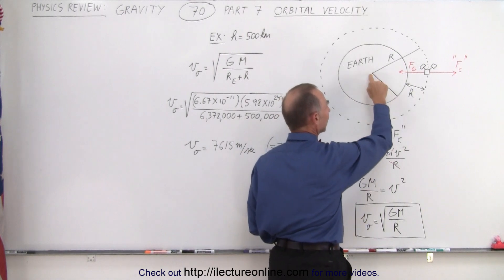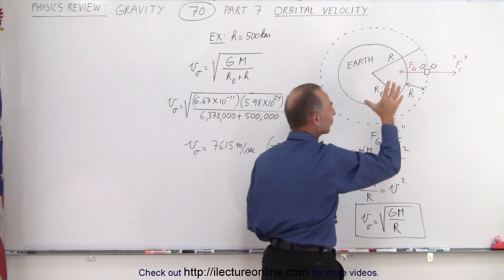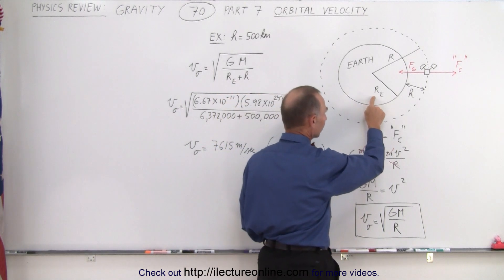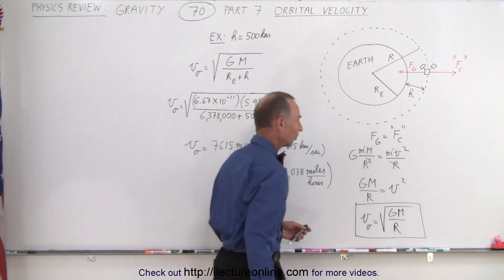Earth has the radius of the Earth, and then we have big R, which is the radius of the orbit itself, which is simply the sum of the radius of the Earth and the height above the surface of the Earth.